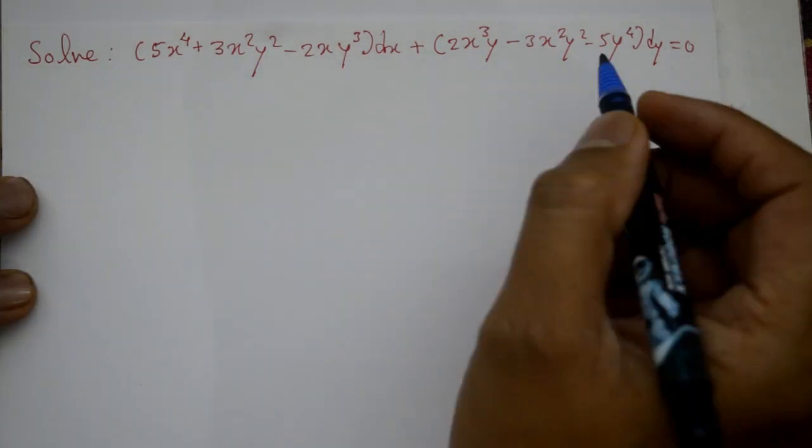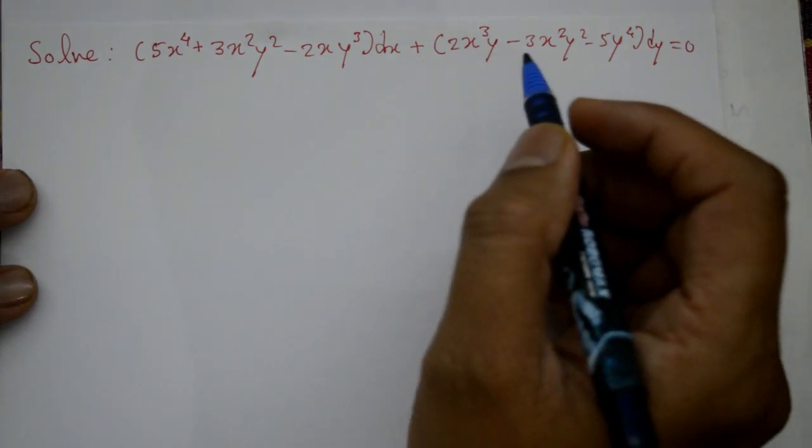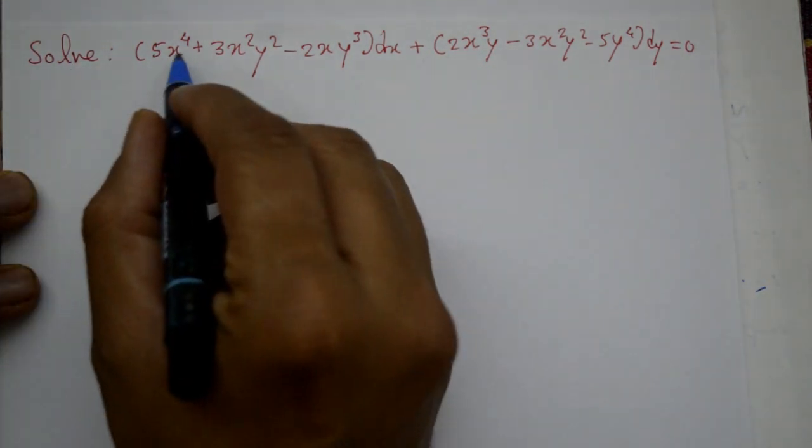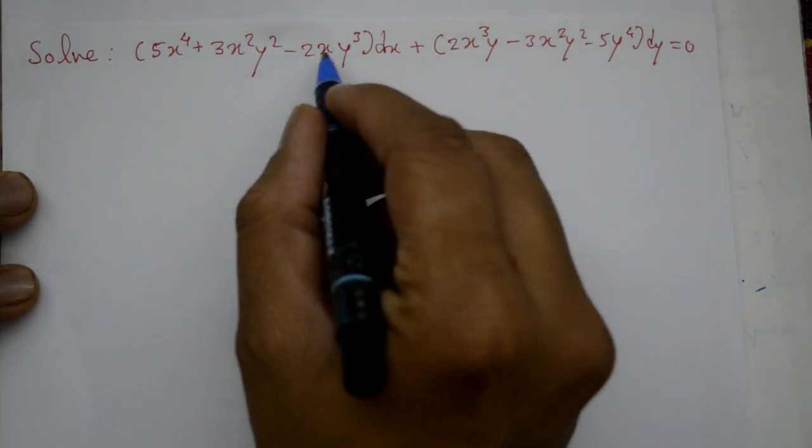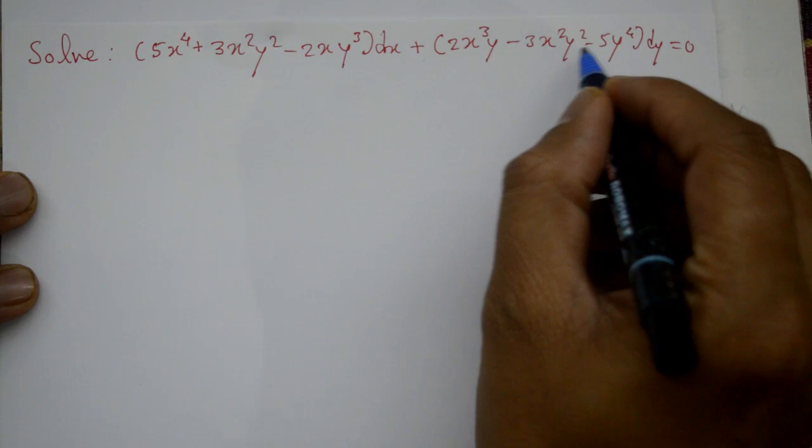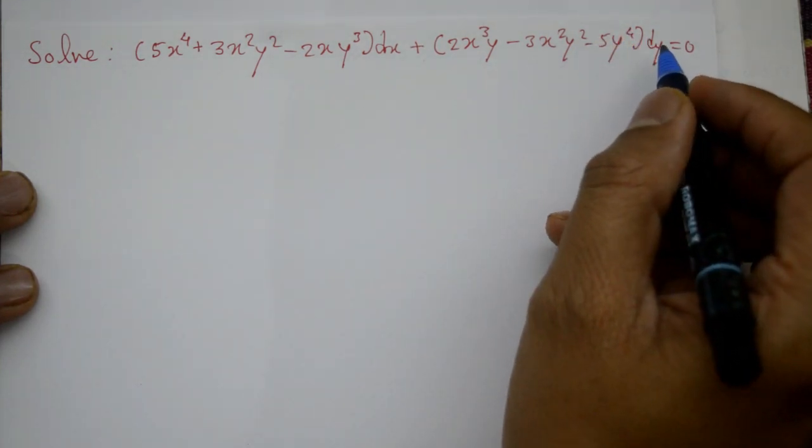Welcome friends, we will solve this problem, an exact differential equation. We will find its solution. Now solve: 5x^4 + 3x^2y^2 - 2xy^3 dx + (2x^3y - 3x^2y^2 - 5y^4) dy = 0.